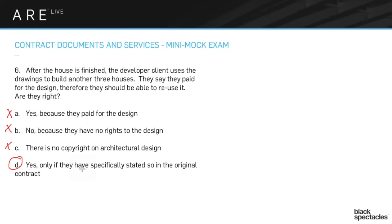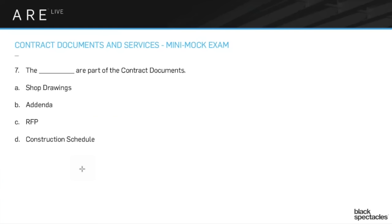Question seven: the blank are part of the contract documents. The answer is B — the addenda. Why not shop drawings? Shop drawings are produced by the contractor and other parties. You review them and they're part of the overall project, but they're not part of the contract documents you prepared for the contractor. Contract documents are essentially the materials that define the contract between the owner and the general contractor — the drawing set and project manual are what you're aiming towards to make their contract.